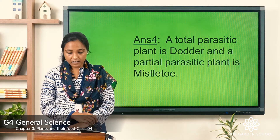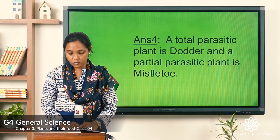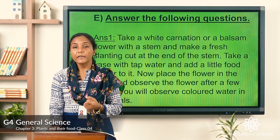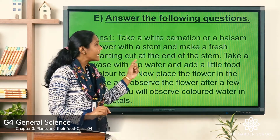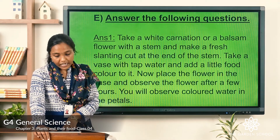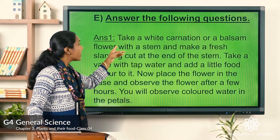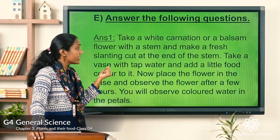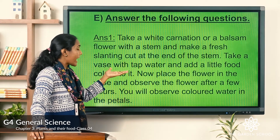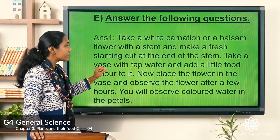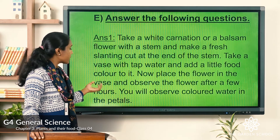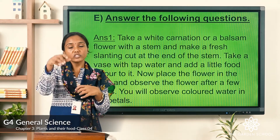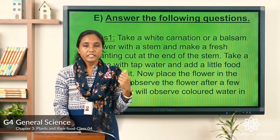Now exercise five: answer in two or three sentences. Question one: describe an activity to show that veins help carry water up in a plant. Take a white carnation or balsam flower with a stem and make a fresh slanting cut at the edge of the stem. Take a vase with tap water, add a little food color, place the flower in the vase, and observe after a few hours. The colored water appears in the petals, showing that veins carry water from the roots to all parts of the plant.